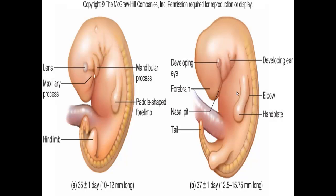The next series of images shows the progression of development. Around day 35, some features are already visible: the lens of the eye, the maxilla and mandible of the jaw, the forelimbs — though the fingers have not yet separated — and the hind limbs. The tail is still quite prominent at this point. Yes, we all have a tail at this stage of development.